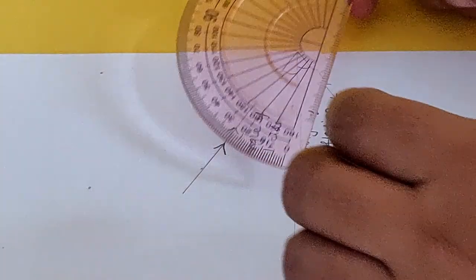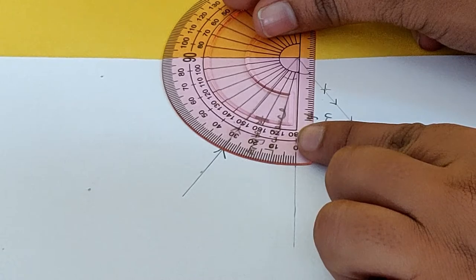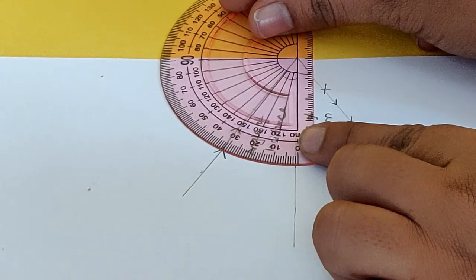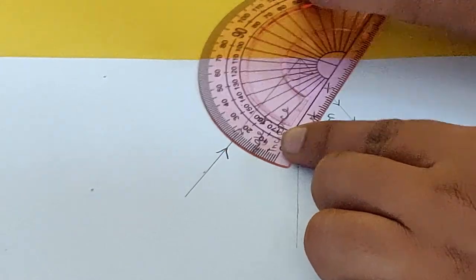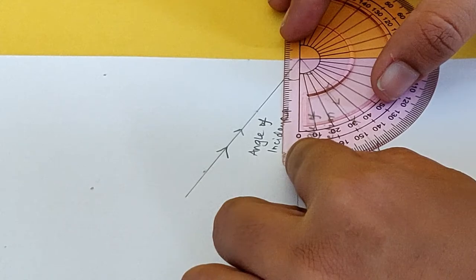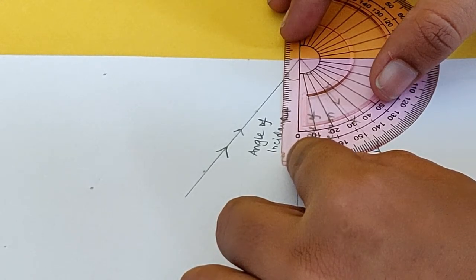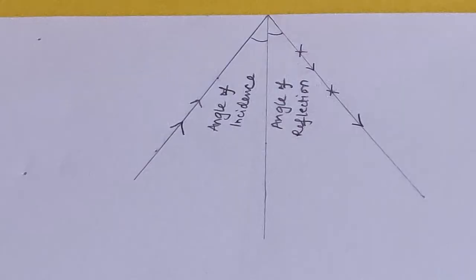Using a protractor, measure the angle between the normal line and the incident ray line. This is the angle of incidence. And measure the angle between the normal line and the reflected ray line. This is the angle of reflection. Check if the angle of incidence is equal to the angle of reflection.